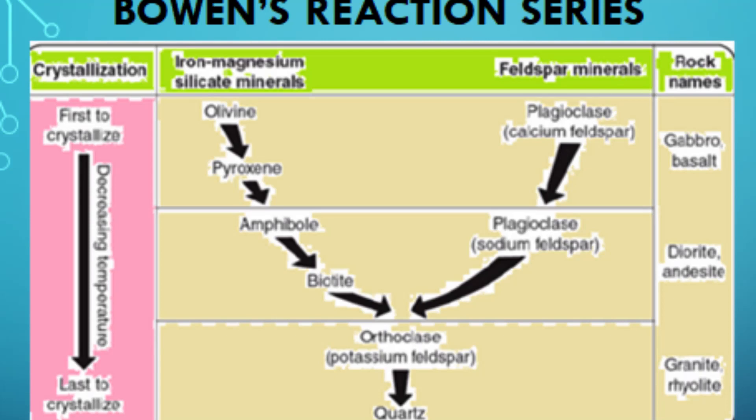The third principle is that minerals can change composition as they crystallize. This is especially true for plagioclase feldspar, which can vary in composition from calcium-rich (anorthite) to sodium-rich (albite), depending on the temperature at which it crystallizes.